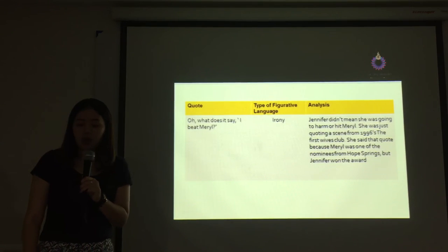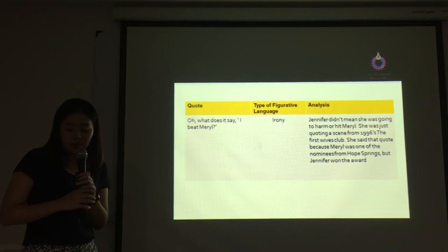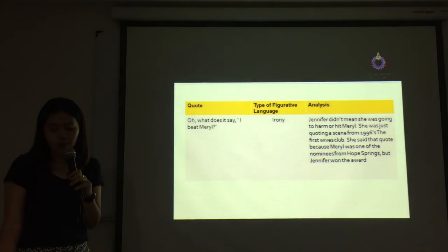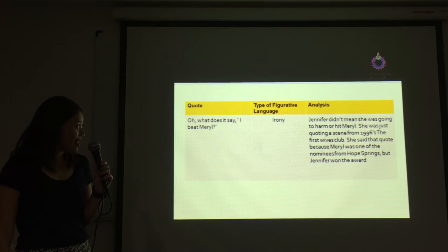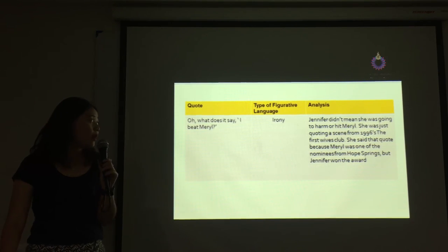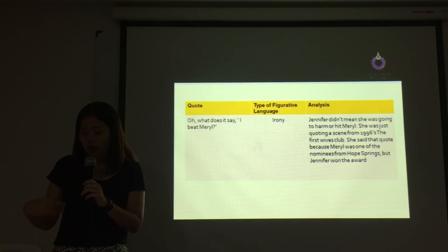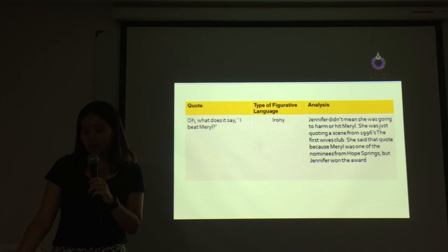Jennifer also said, 'I beat Meryl!' The statement has an ironic meaning, because Jennifer didn't mean she was going to harm or hit Meryl. She was just quoting a scene from 1996. She said that quote because Meryl was one of the nominees and Jennifer won the award, and she said it to make a humorous statement.